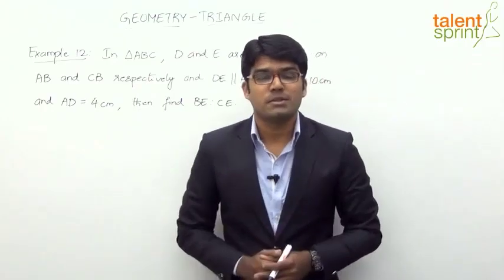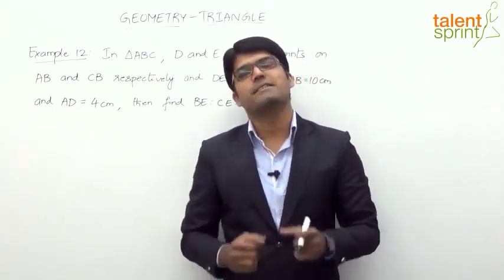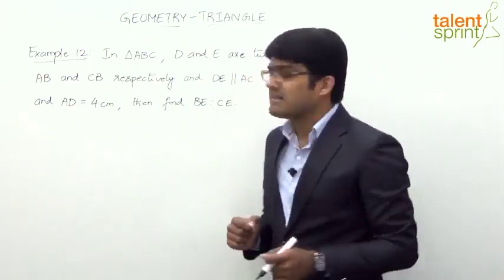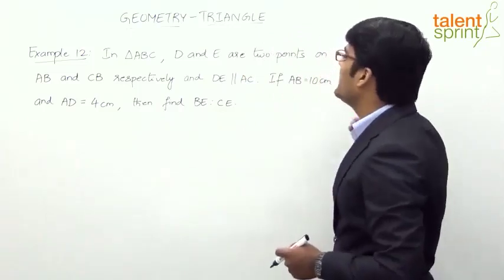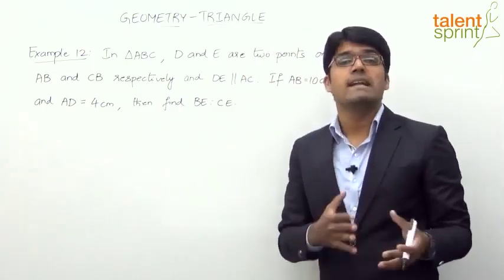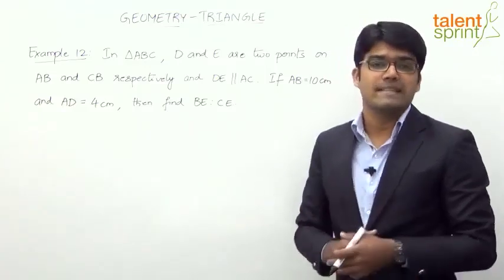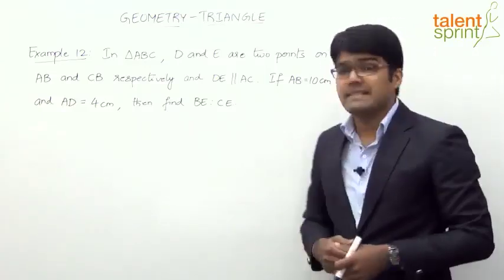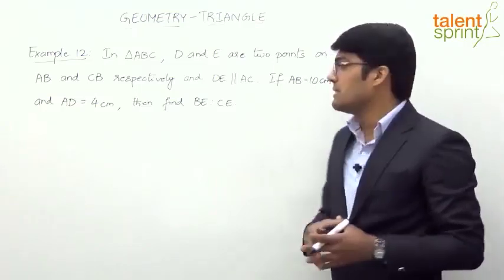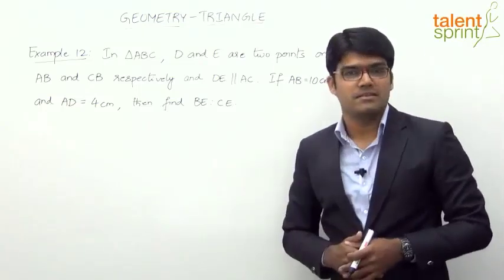Let us now solve a question based on the basic proportionality theorem that we had learned earlier. The question here is in triangle ABC, D and E are two points on AB and CB respectively, and DE is parallel to AC. If AB is 10 cm and AD is 4 cm, then find BE is to CE.